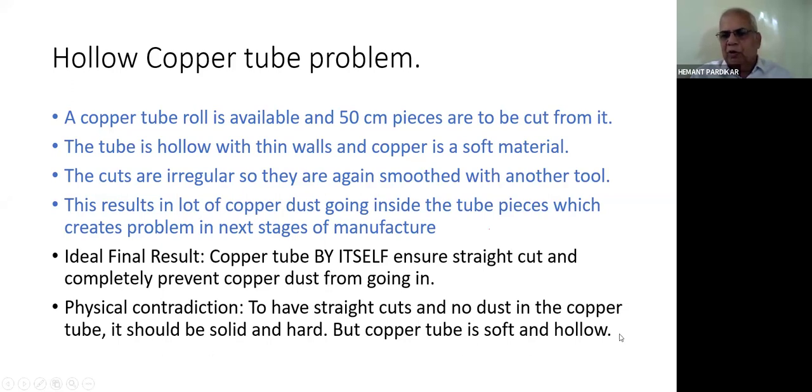What is the physical contradiction? To have straight cuts and no dust, copper tube should be solid and hard, but copper tube is soft and hollow. How is this physical contradiction removed? The copper tube is open at one end, we can pour water in it. We know the internal diameter and volume, so we know how much water column we can create. Once we pour sufficient water, say four or five meters of water column, we plug the open end and then freeze it. Once frozen, there is ice in the copper tube which makes it solid and hard.